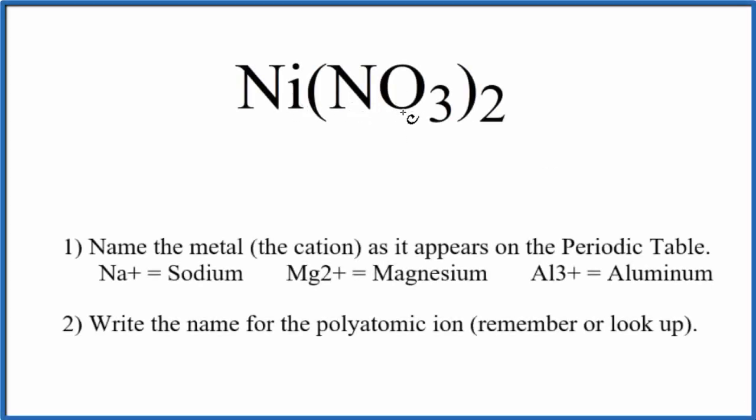To write the name for Ni(NO₃)₂, we first need to recognize this NO₃. This is the nitrate ion, a polyatomic ion. We have two of them.